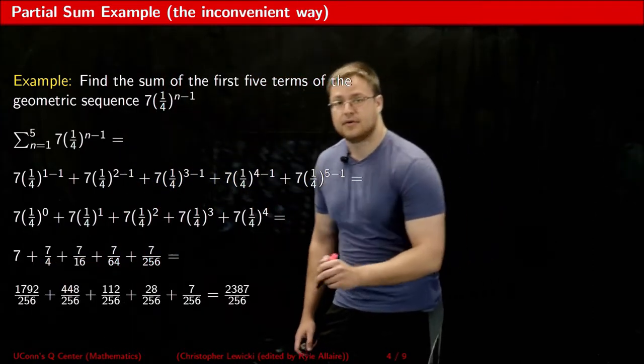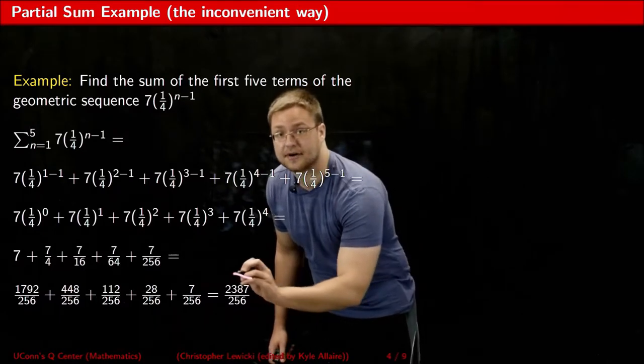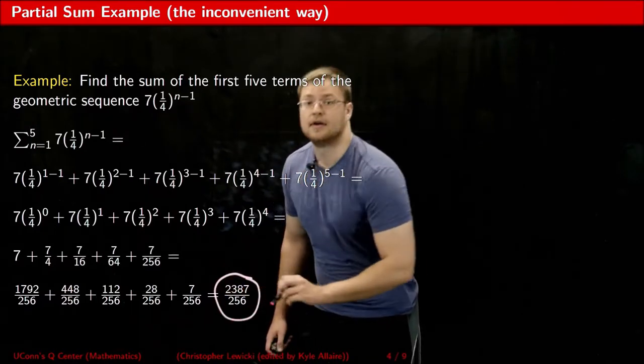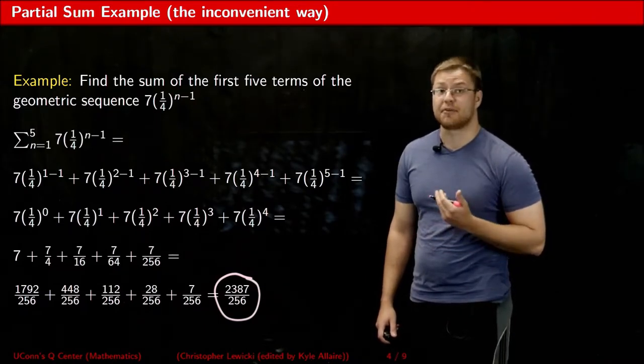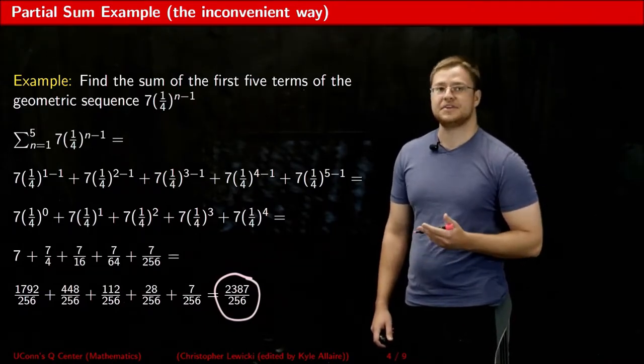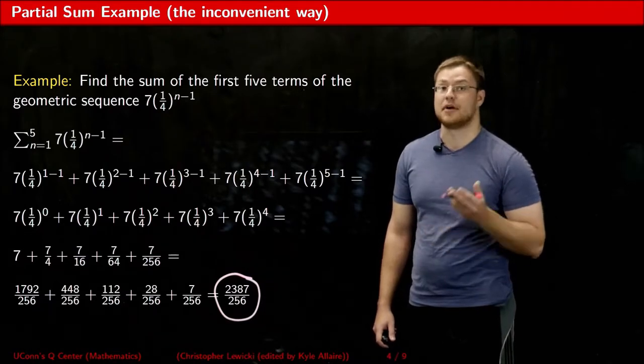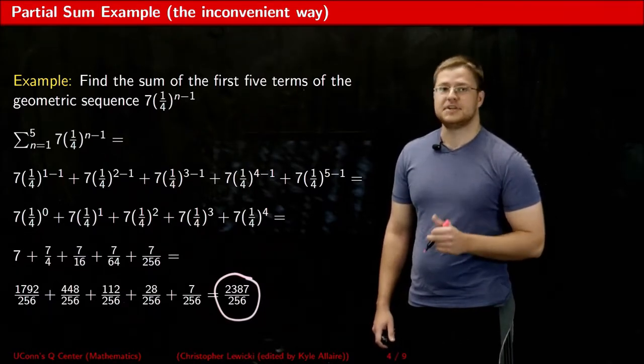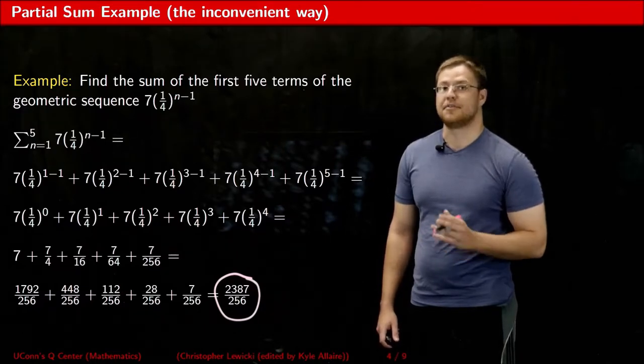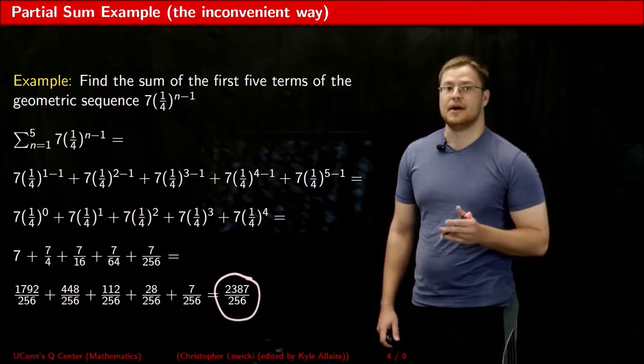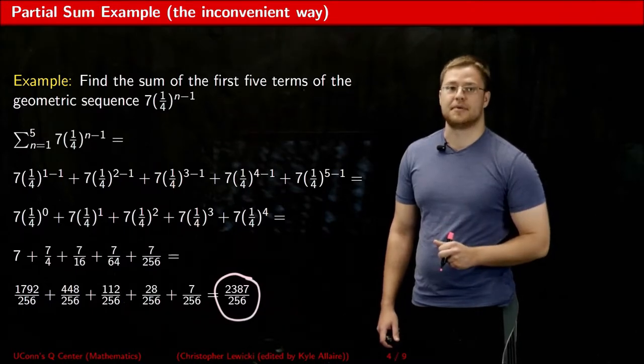Once we do that, we finally get this as our answer. We have to do all this inconvenient work just for the sum of the first five terms. Just imagine if we were trying to find the sum of the first 100 terms or so. Fortunately, there is a very simple formula for calculating partial sums, no matter how many terms you're trying to add up together. I'm now going to show you where the formula comes from.